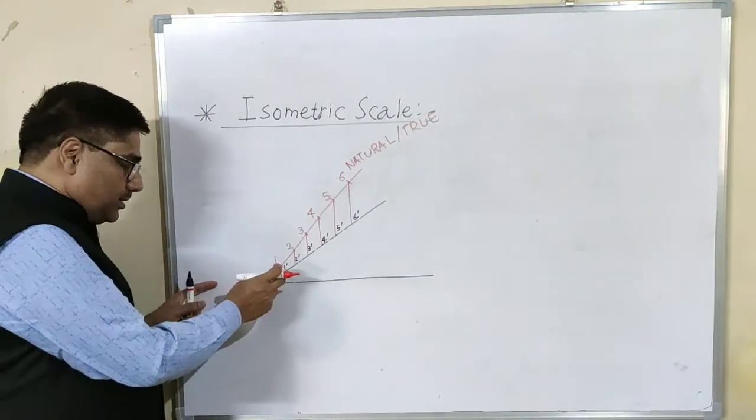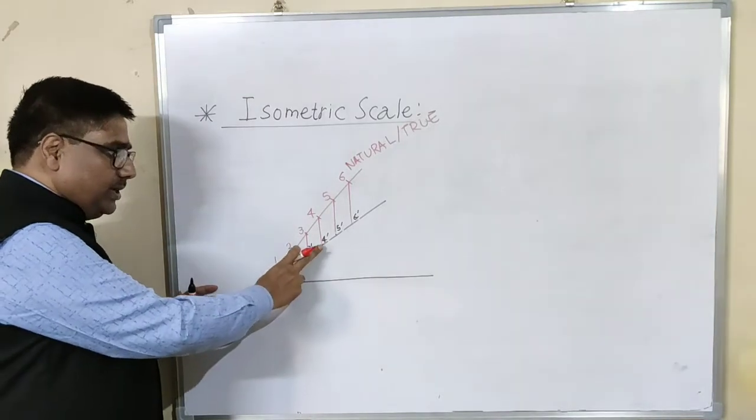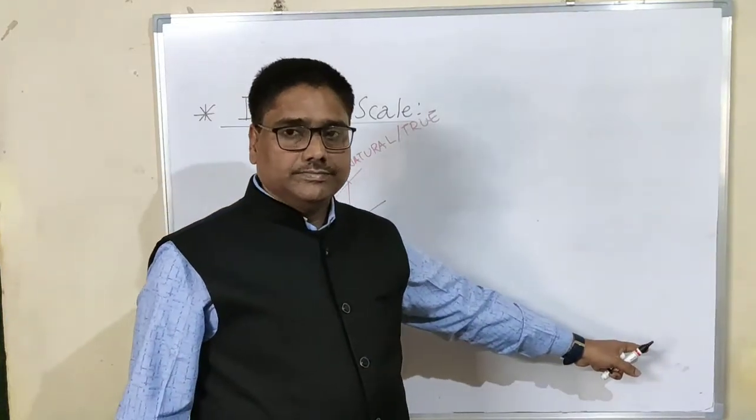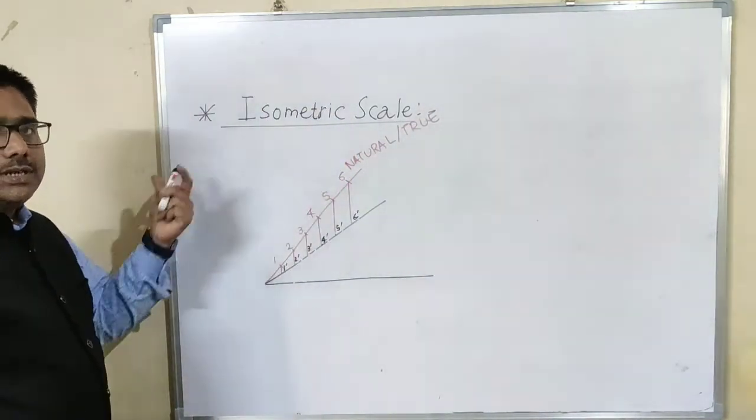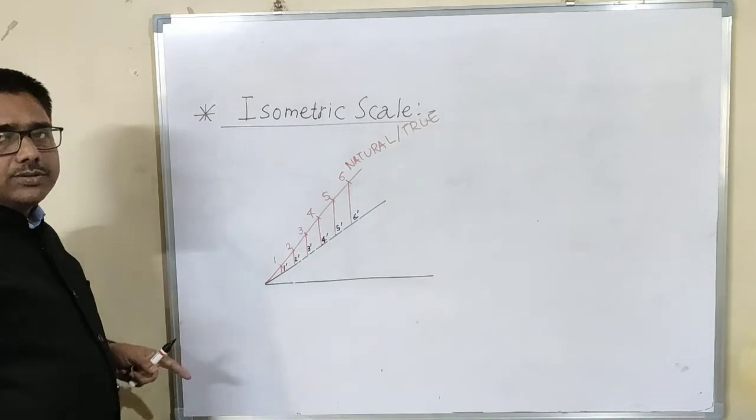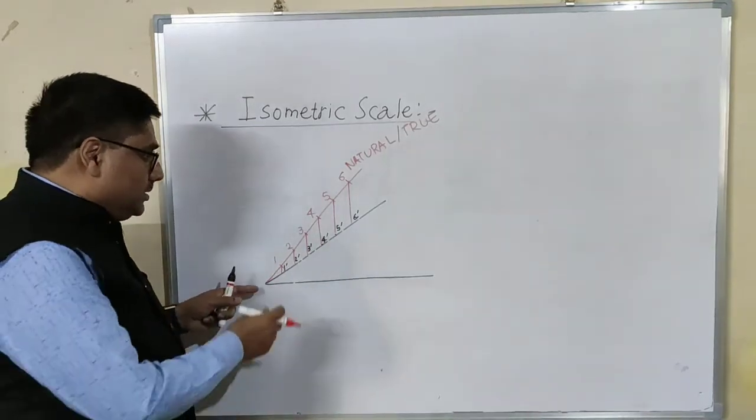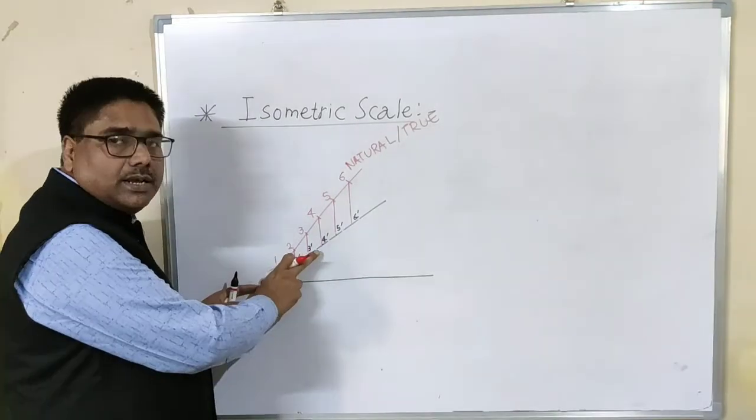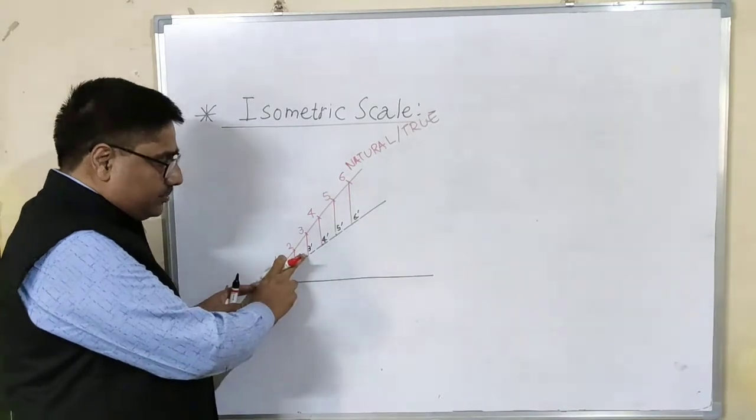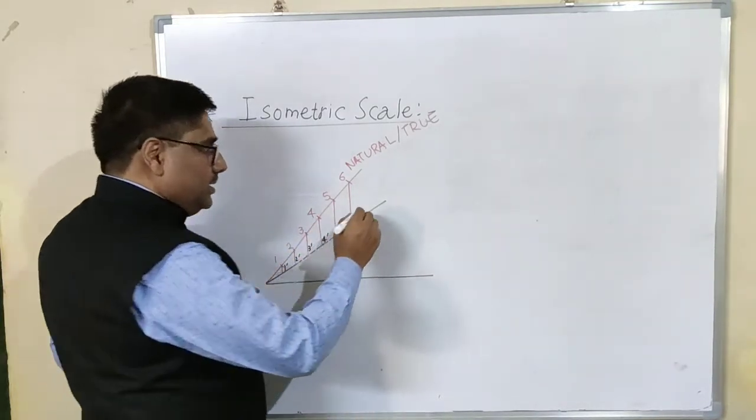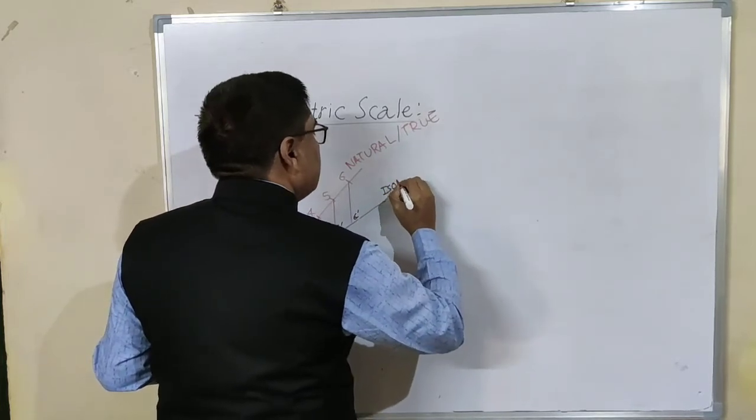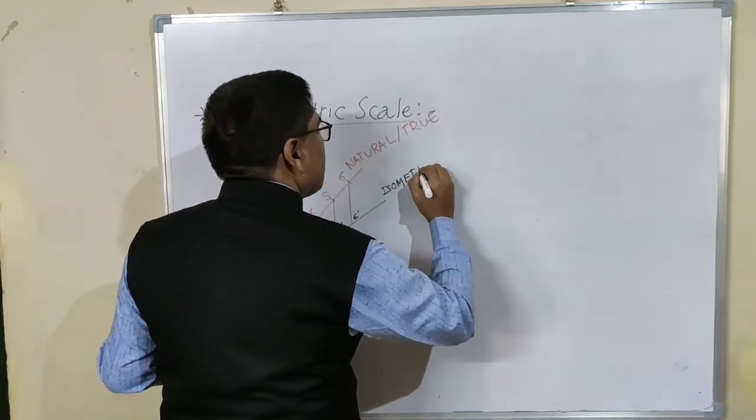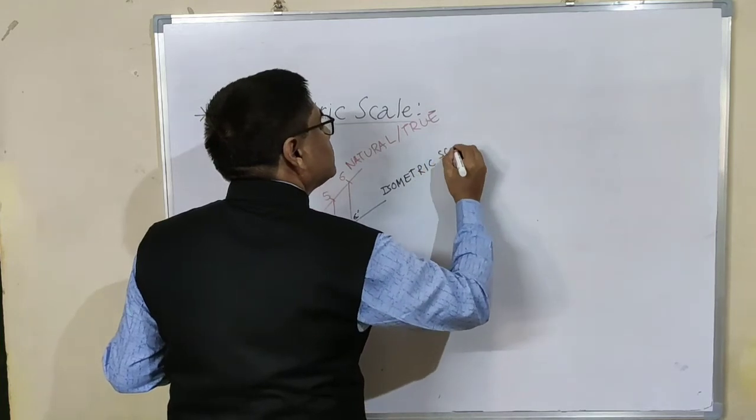And if we use these dimensions, of course these dimensions will be reduced as per that conversion, 0.816 times the original dimension, then it is called isometric projection. We are supposed to transfer the required dimension from this 30 degree line. This scale is isometric scale.